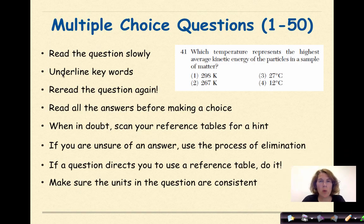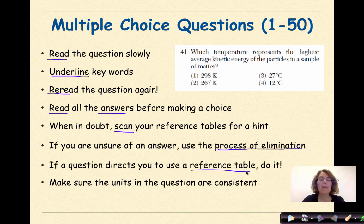Multiple choice questions 1 through 50, also known as part A and B1. You want to read the questions slowly, underline key words, re-read the questions again, read all the answers before making a choice, when in doubt, scan your reference tables for a hint, if you're unsure of an answer, use the process of elimination. If a question directs you to use a reference table, do it, and make sure the units in the question are consistent.